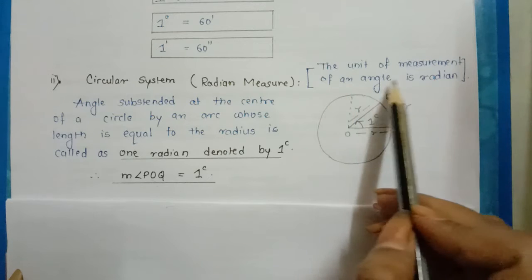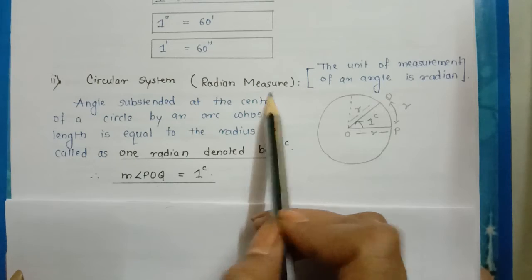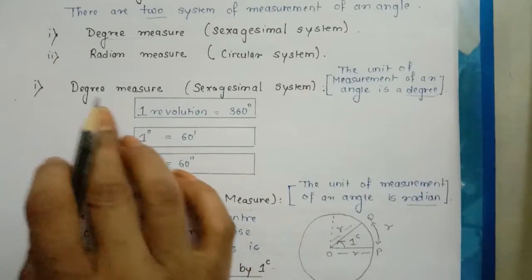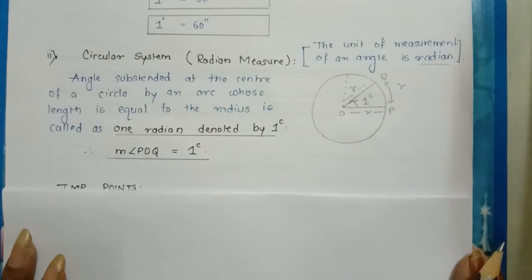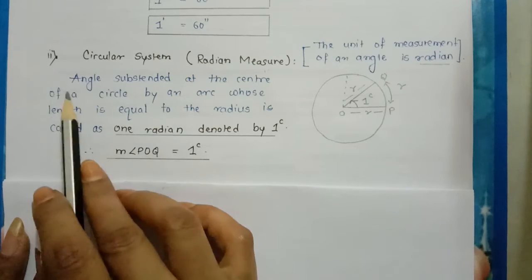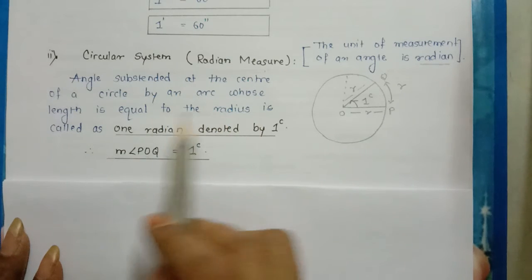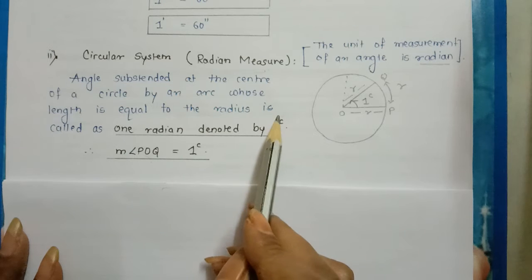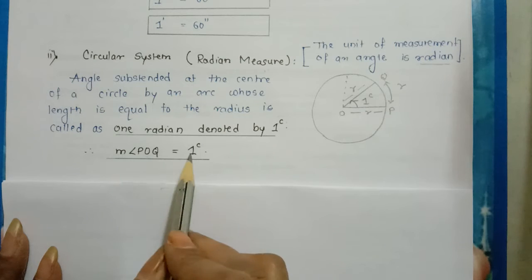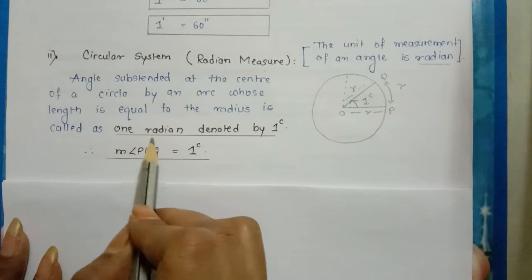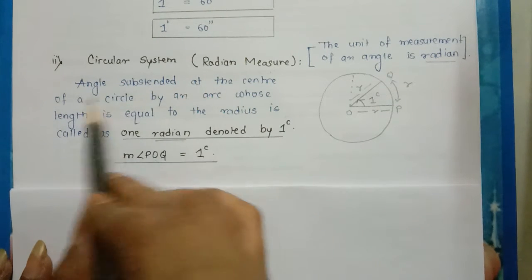In the radian measure, the unit of measurement of an angle is in radian, whereas in degree measure it is in degree. An angle suspended at the center of a circle by an arc whose length is equal to the radius is called one radian, denoted by 1 raised to c. Therefore, the measure of angle POQ is one radian. This is the notation for radian.